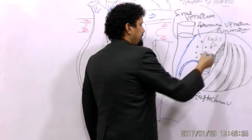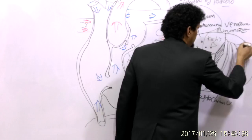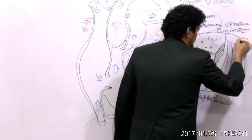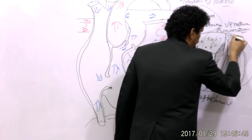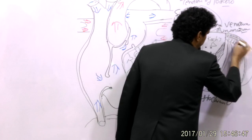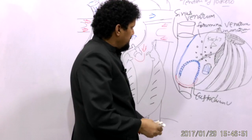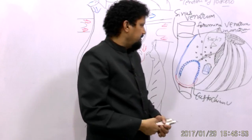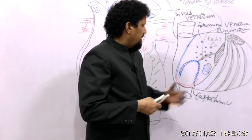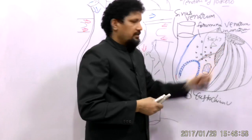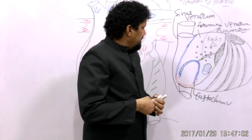Here we can see the right auricle, which looks like the ear of a dog, hence known as the auricle. It also contains musculi pectinati and is a potential site for formation of thrombus. These thrombi can cause pulmonary embolism, which is a fatal and dangerous disease.